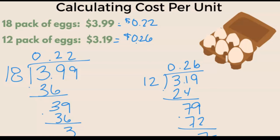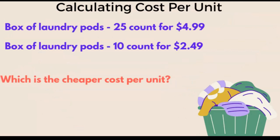Now that you've been through an example of how to calculate the cost per unit, let's go through one you can try on your own. Assume you have a box of laundry pods — 25 of them — and they cost $4.99. The next box has 10 laundry pods and costs $2.49. Which has the cheaper cost per unit? Leave your answer in the comments below. Good luck!